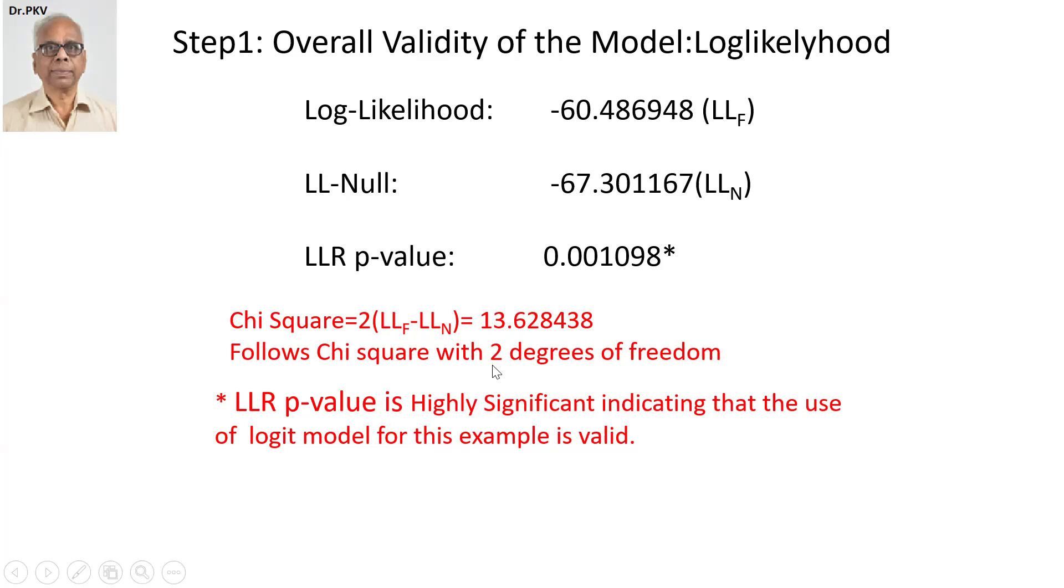Because we are estimating b1 and b2. b0, b1, and b2 are three, including the intercept. It is three, but only two predictor variables are estimated. Therefore, the degrees of freedom is two.